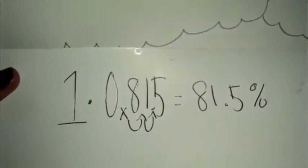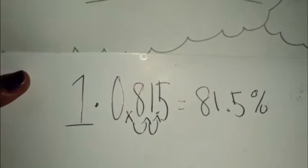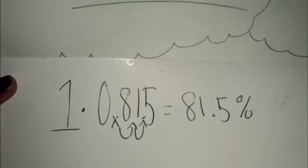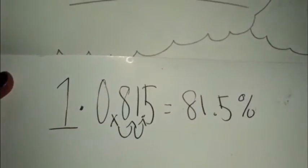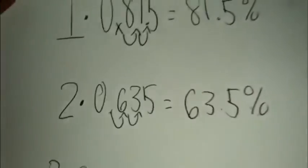Number one: 0.815. Move it over two times, 81.5%. Number two: